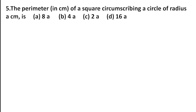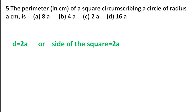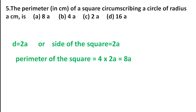Fifth question: the perimeter of a square circumscribing a circle of radius a cm. We need to find the perimeter of the square. Since the circle is circumscribed, the diameter of the circle equals the side length of the square. So diameter = 2a, meaning side = 2a. Perimeter = 4 × side = 4 × 2a = 8a. First option is correct.